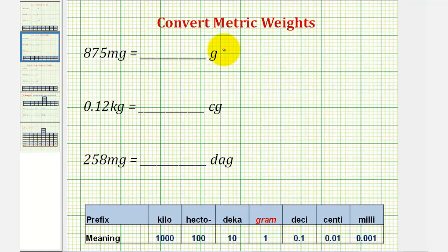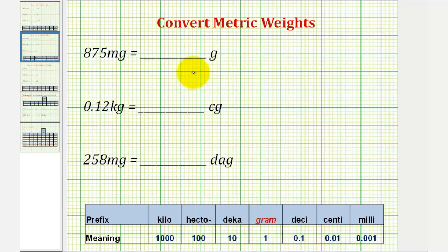Welcome to three examples of converting weights using metric units. In a previous video, we explained how we can use a table to perform conversions by moving the decimal point to the left or right based upon the columns. But in these three examples, we'll perform the conversions using unit fractions.